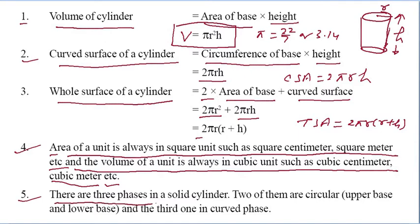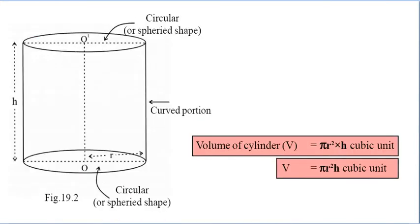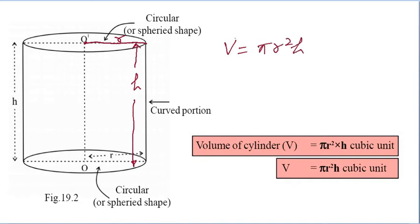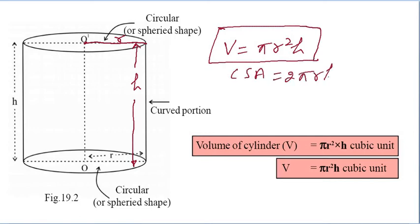There are 3 faces of a solid cylinder: 2 of them are circular — the upper base and the lower base — and the third one is the curved face. The radius is represented by r and the height by H. Remember: Volume = pi r square h, CSA = 2 pi r h, and TSA = 2 pi r (r + h).